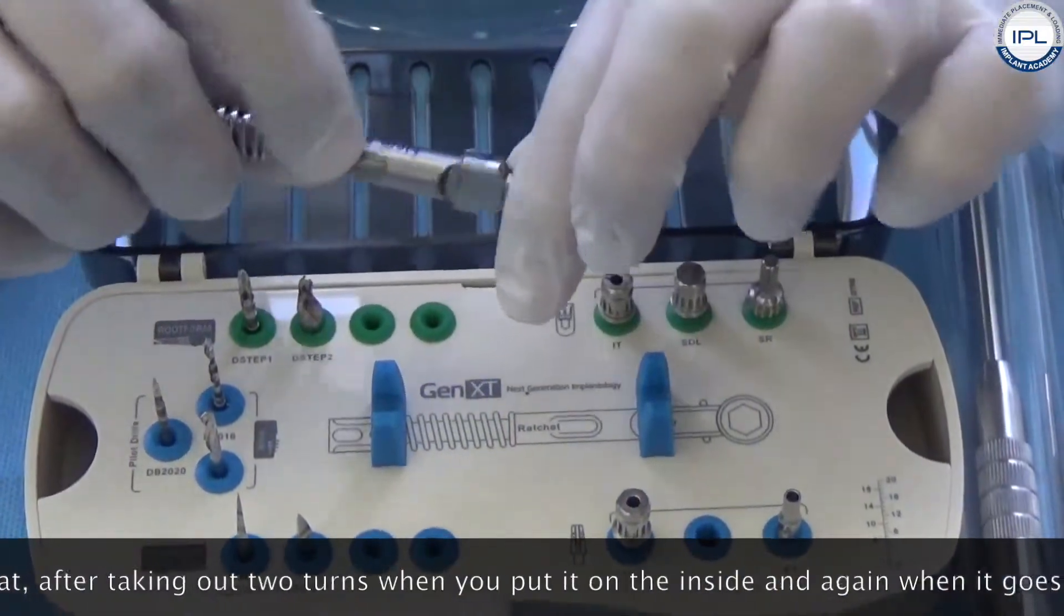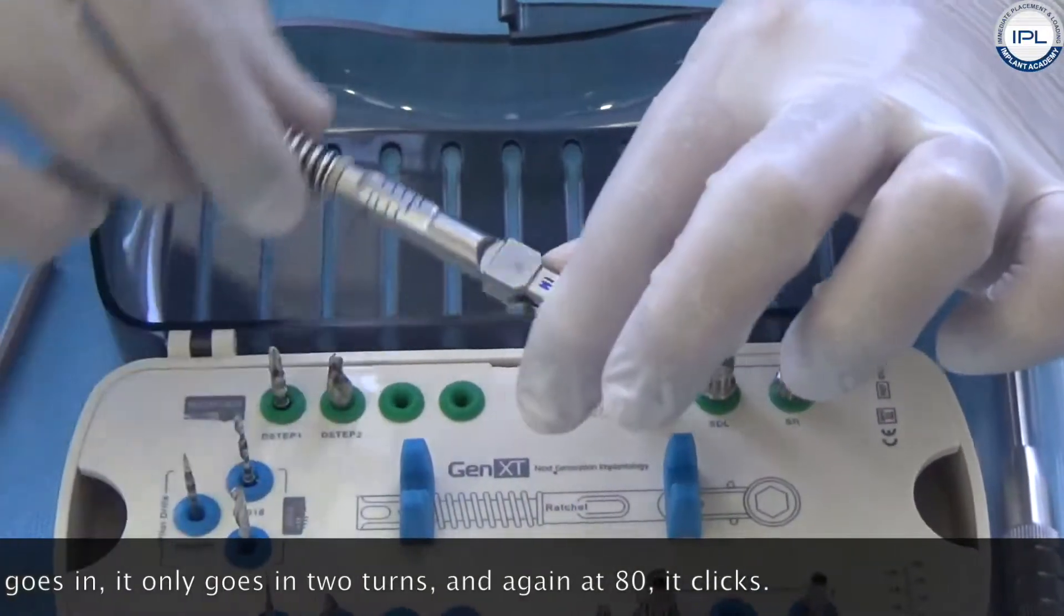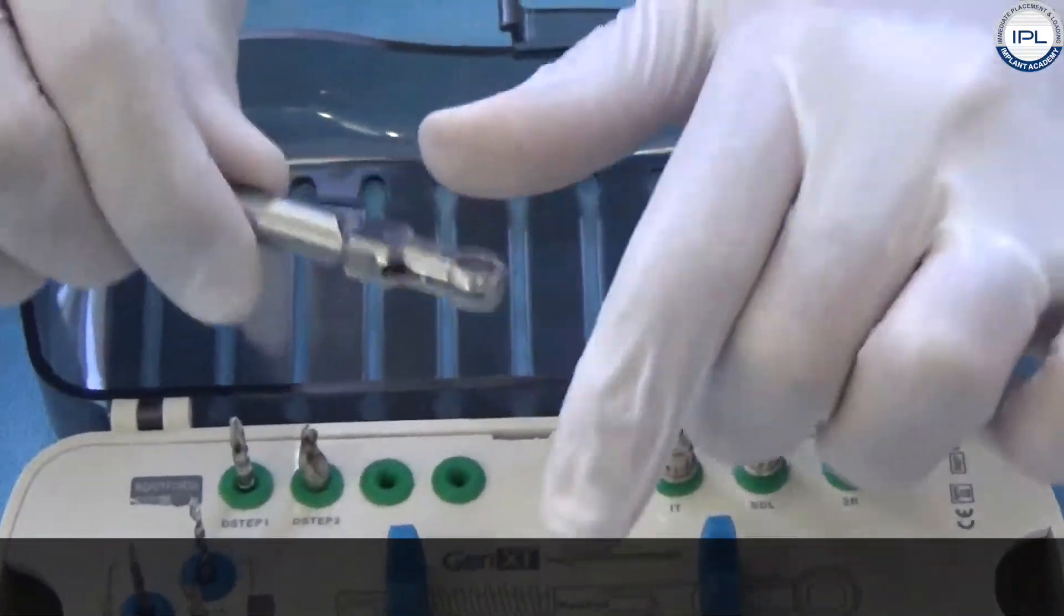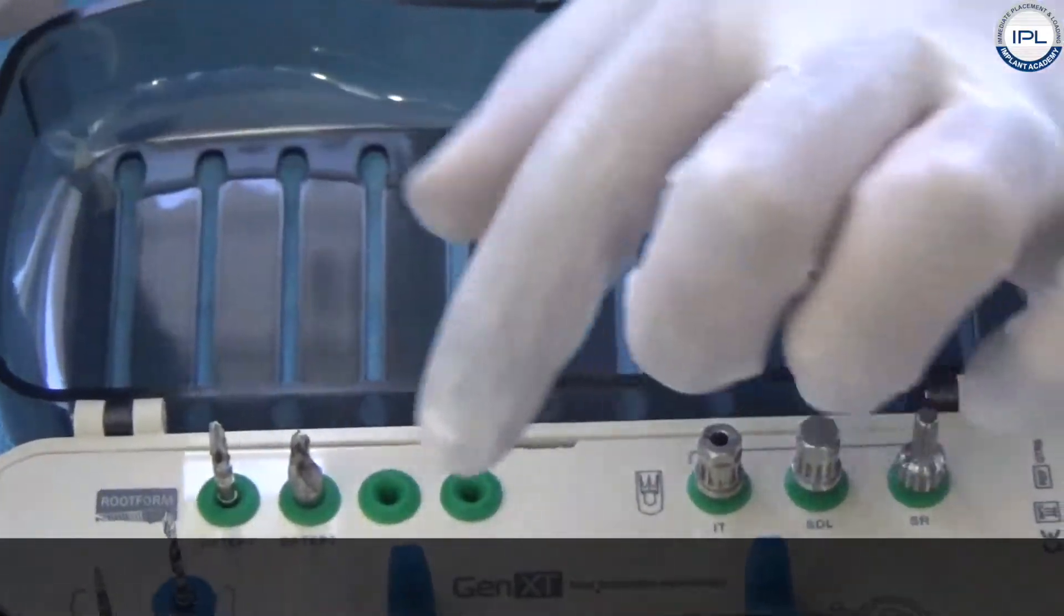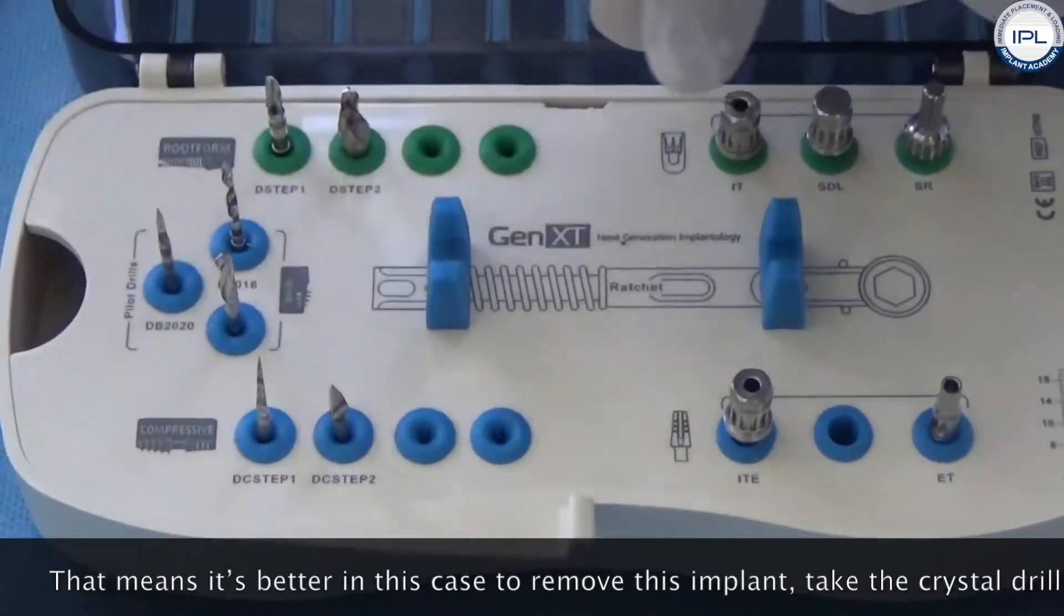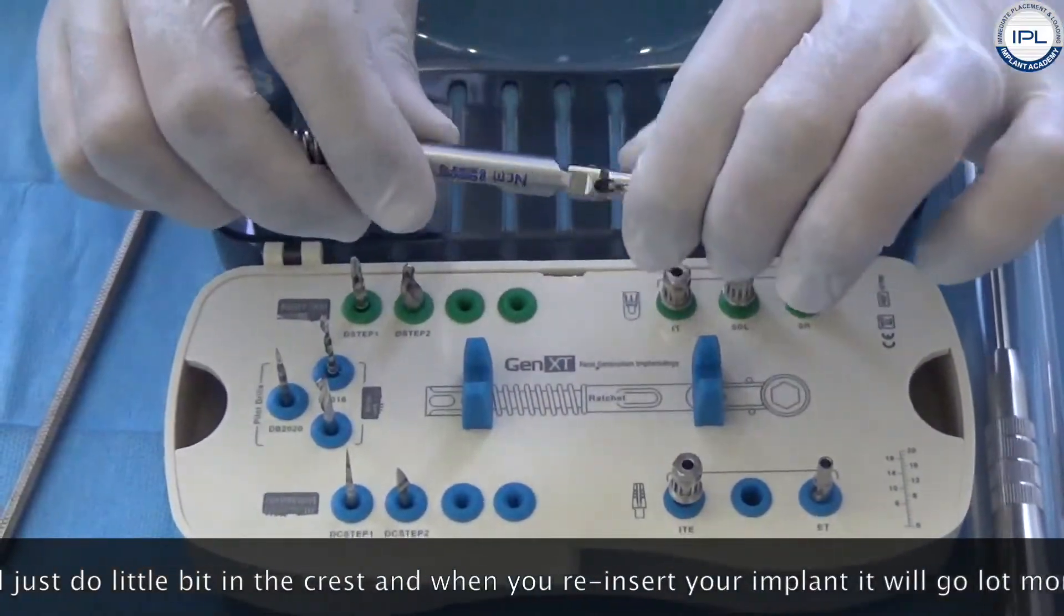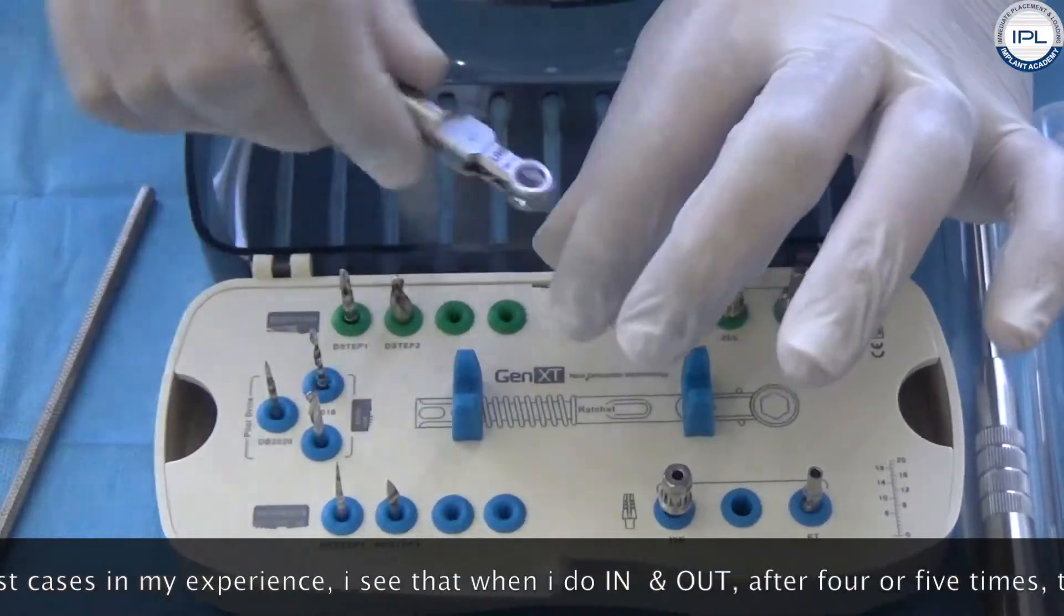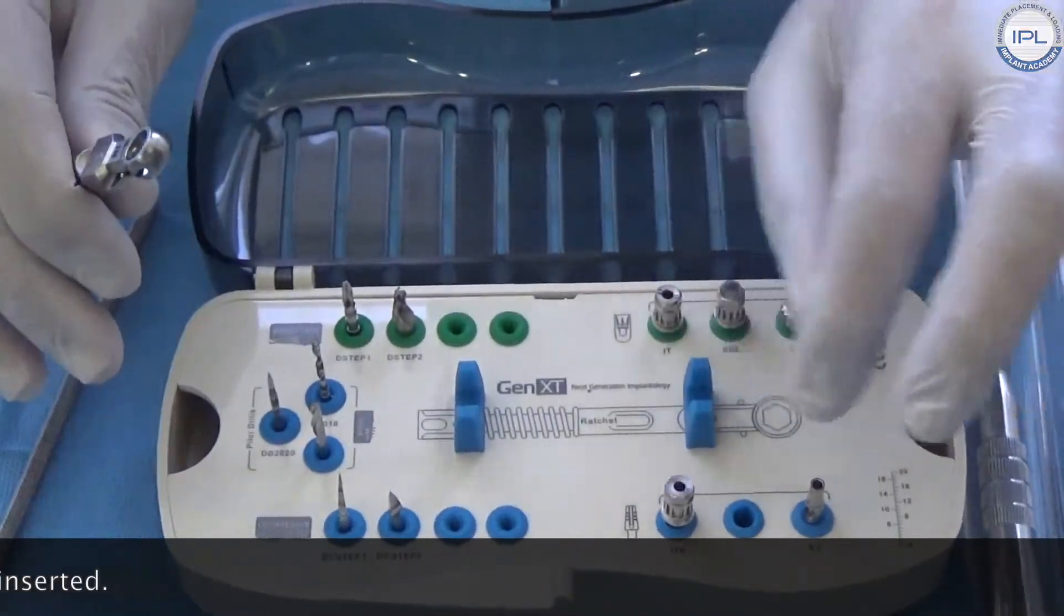Should you have a situation where after taking out two turns, when you put it on the inside and again when it goes in, it only goes in two turns and again at 80 it clicks, that means it's better in this case to remove this implant, take the crestal drill if it's the compression implant, and just do a little bit in the crest. When you reinsert your implant it will go a lot more easier. But in most cases in my experience, I always see that when I do in and out, in and out, after four or five times the entire implant is inserted.